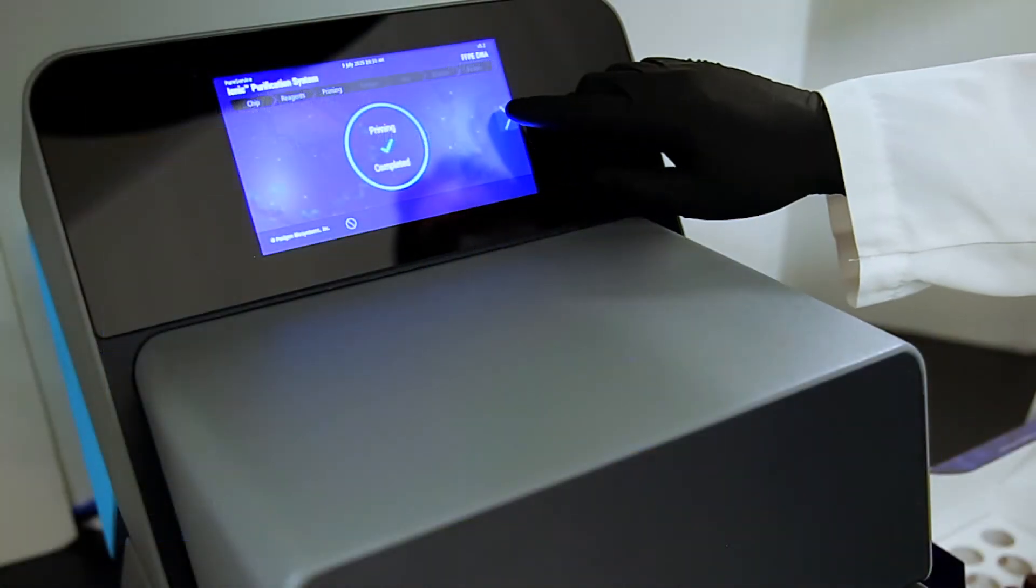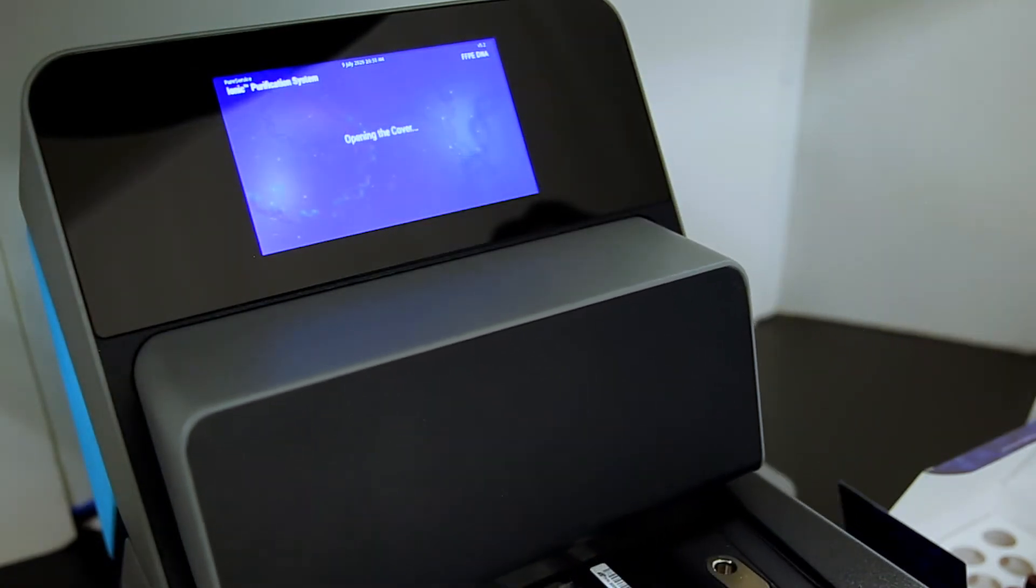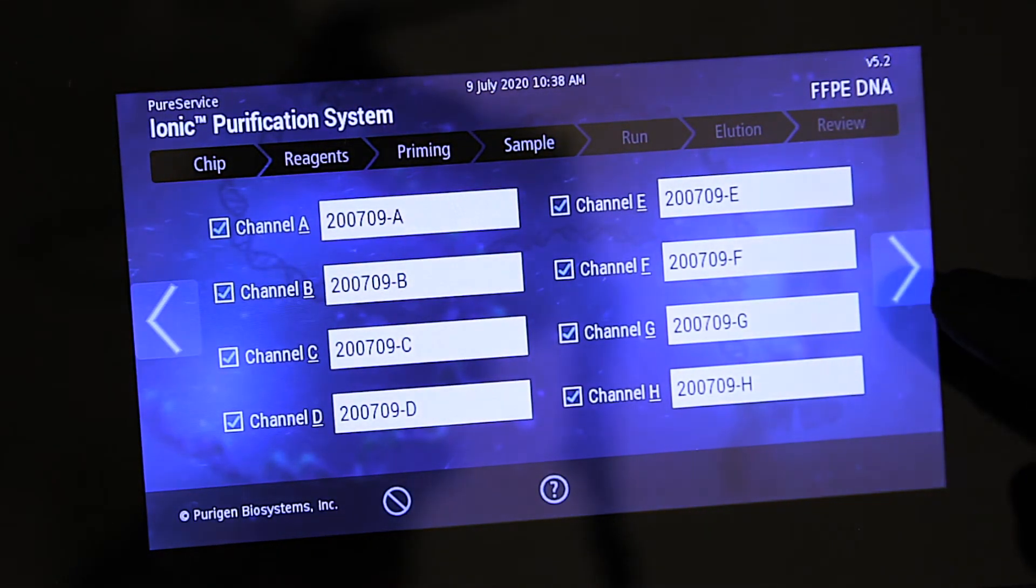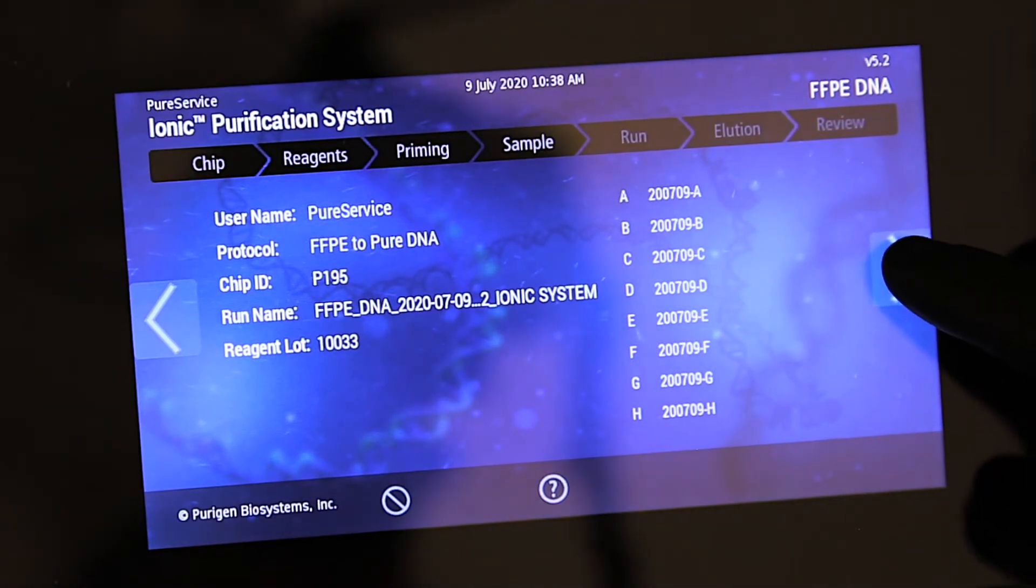After the priming is complete, sample can be loaded into each of 8 sample wells of the fluidic chip. Information about each sample can be entered into the touch screen. The information will be accessible with the run results in log files at the end of the run.